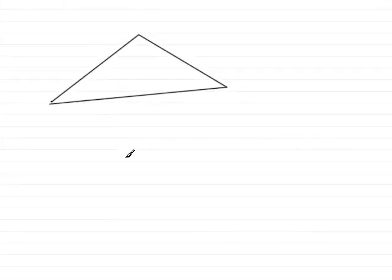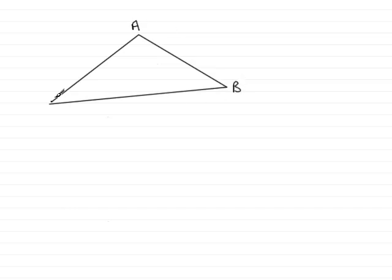Before we start to work out the areas of segments of circles, what we need to do is just recap on how we find the area of a triangle, because that's going to be used quite often in most problems. If we take a triangle and label the angles A, B, C, the conventional way of labelling the opposite side to A is little a, the opposite side to angle B is little b, and the opposite side to C is little c.